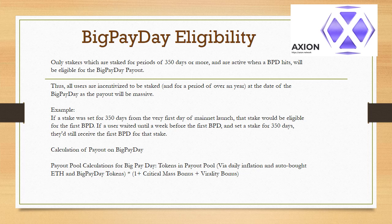Calculation of payout on Big Pay Day: tokens in payout pool via daily inflation and auto-bought ETH and Big Pay Day tokens, multiplied by (1 plus critical mass bonus plus virality bonus).